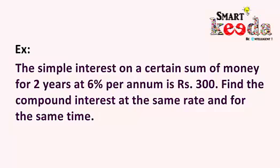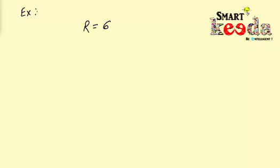Now let's take another example and see whether this trick works or not. The question says: the simple interest on a certain sum of money for two years at six percent per annum is three hundred rupees. Find the compound interest at the same rate and for the same time. Let's note down what's given: rate is six percent and simple interest is three hundred rupees.